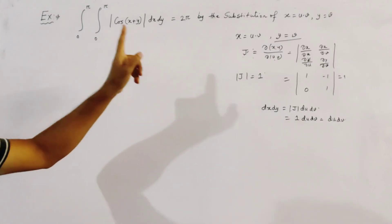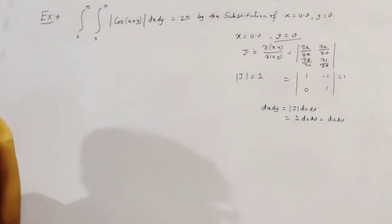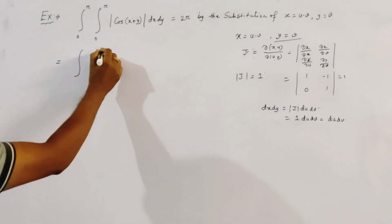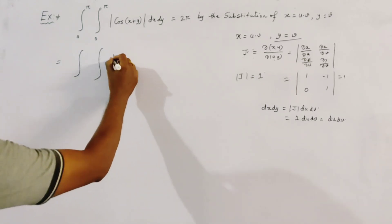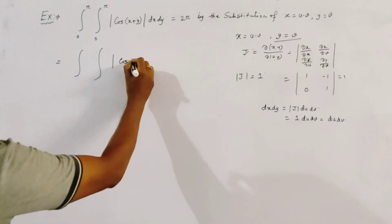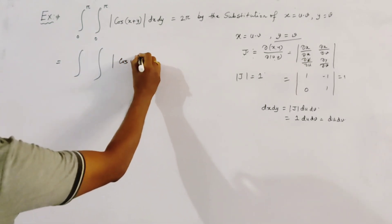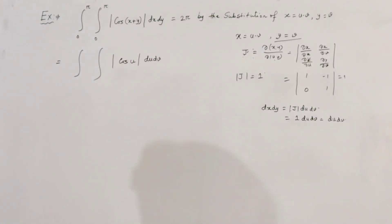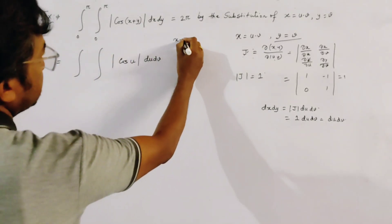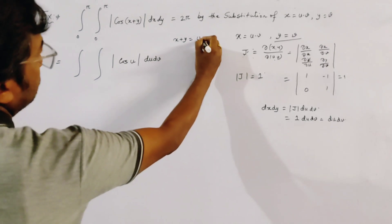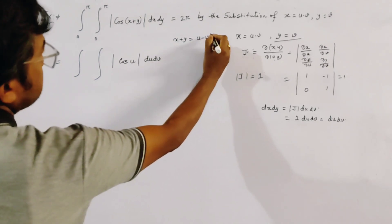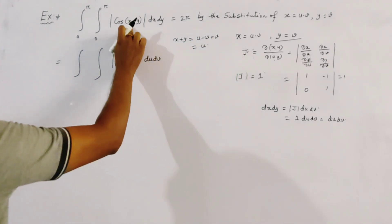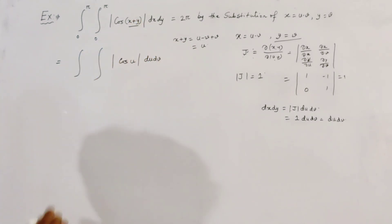By transformation, the integration becomes ∫∫ |cos u| du dv. Because x + y = (u - v) + v = u, so we substitute x + y = u.